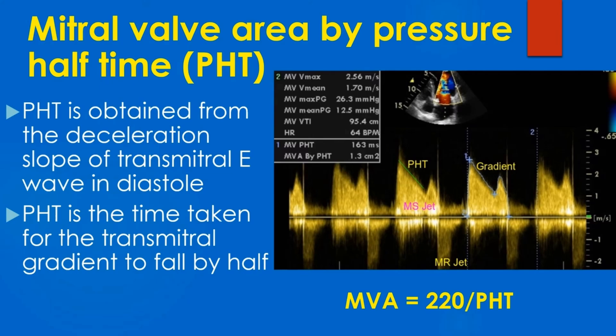A PHT of 220 ms corresponds to a mitral valve area of 1 square centimeter. Dividing 220 by the measured PHT gives the estimated mitral valve area. In this case, the PHT was 163 ms, giving an estimated mitral valve area by PHT of 1.3 square centimeters.